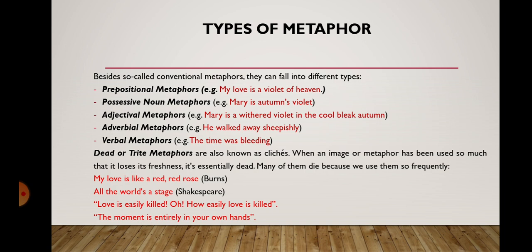But we are more interested in a different type of metaphors. Dead or trite metaphors are also known as clichés. When an image or metaphor has been used so much that it loses its freshness, it's essentially dead — many of them die because we use them so frequently. Examples of trite metaphors are the well-known lines from Robert Burns' poem 'My love is like a red, red rose,' or the example from Shakespeare's Hamlet, 'All the world's a stage.' Trite or dead metaphors are usually used in newspaper articles, sometimes even in scientific language, but rarely in poetry and prose.